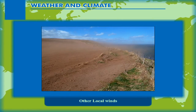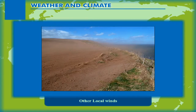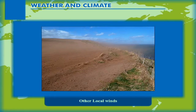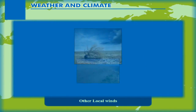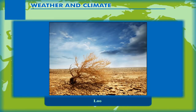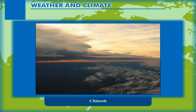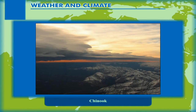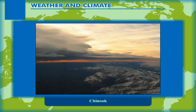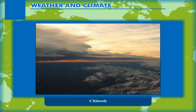Other local winds. Some winds with special characteristics blow over limited areas and have local significance. They have different names in different parts of the world. Loo is a hot and dry wind which blows over the plains of North India during summers. Chinook is a warm and dry wind which blows over the eastern side of the Rocky Mountains in North America. It is also known as snow eater.